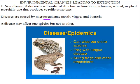A disease may affect one species but not another. A disease can wipe out entire species. Frogs with fungus disease are killed — once they get that fungus disease, the frogs and other amphibians die off. When they are killed, other species are left behind because they are not affected by those diseases.